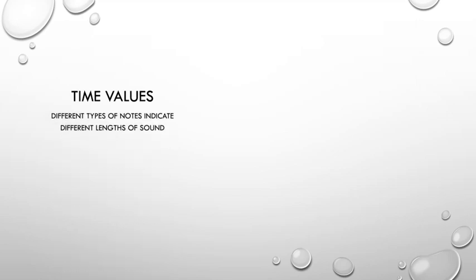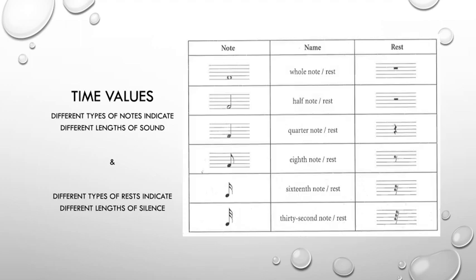In music, different types of notes are used to indicate different lengths or durations of sounds. Remember, we said before that pitch is how high or low, and duration, the amount of time, short or long. So, we're dealing with duration. Different types of rest are used to indicate different lengths or durations of silence.